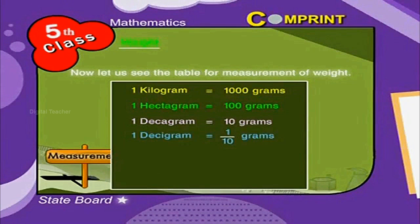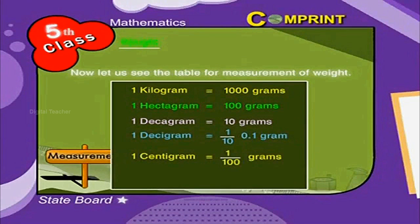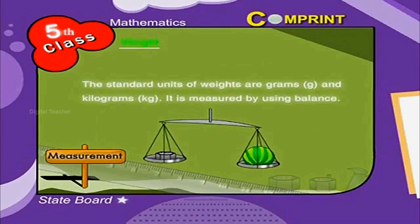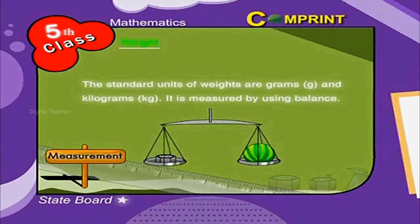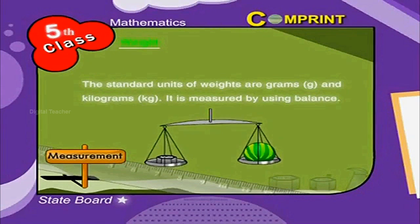One decigram is equal to one-tenth of a gram, also written as 0.1 gram. One centigram is equal to one-hundredth of a gram, also written as 0.01 gram. One milligram is equal to one-thousandth of a gram, also written as 0.001 gram. The standard units of weight are grams, denoted as g, and kilograms, denoted as kg. Weight is measured using a balance.